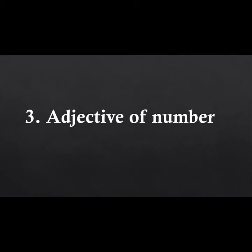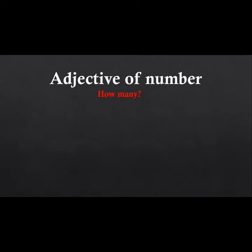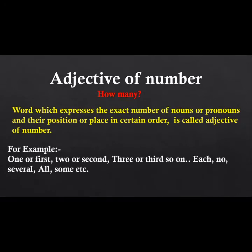The third type is adjective of number, called 'sankhya vachak visheshan' in Hindi. It answers the question: how many? The word which expresses the exact number of nouns or pronouns and their position or place in a certain order is called adjective of number. Examples: one/first, two/second, three/third, four/fourth, and so on.